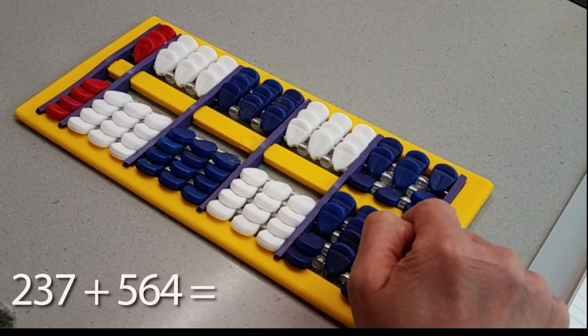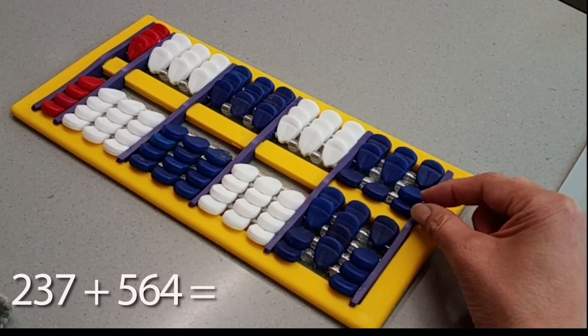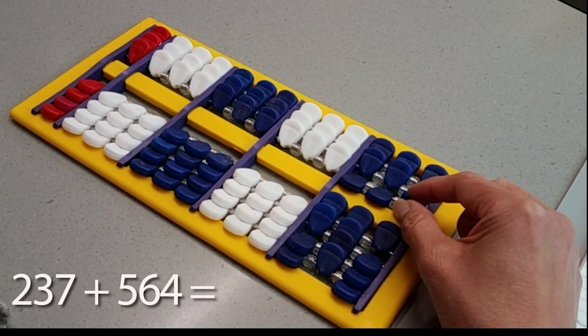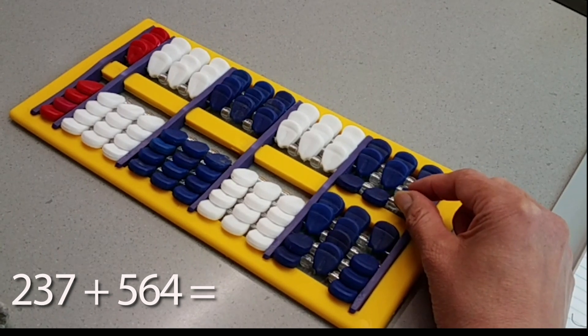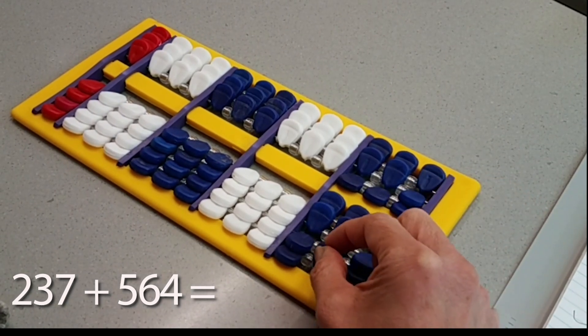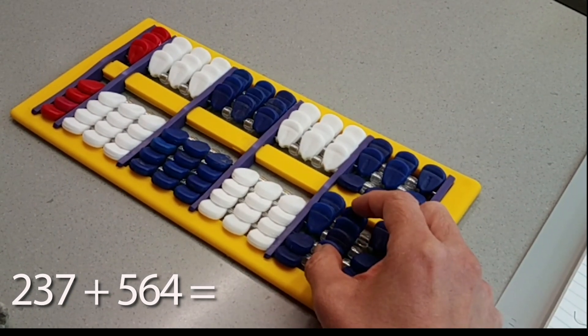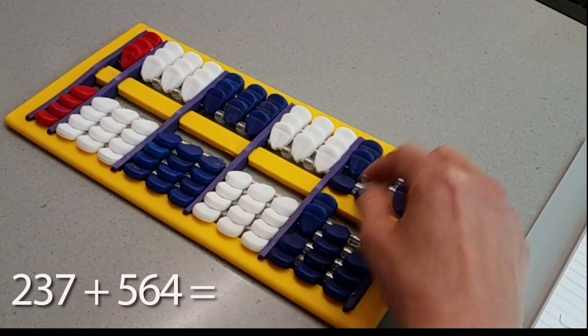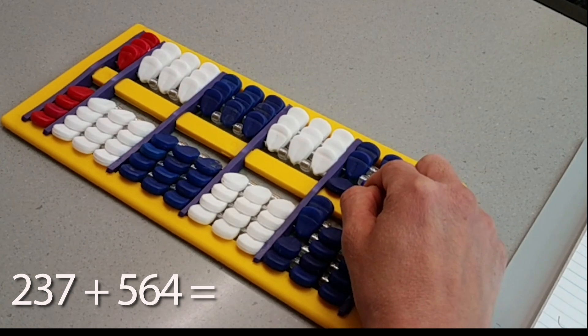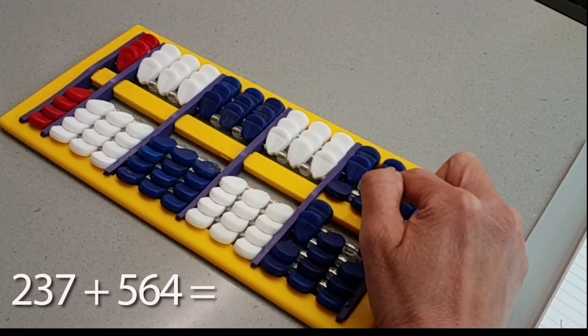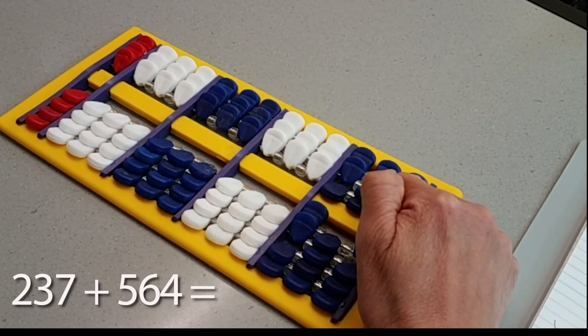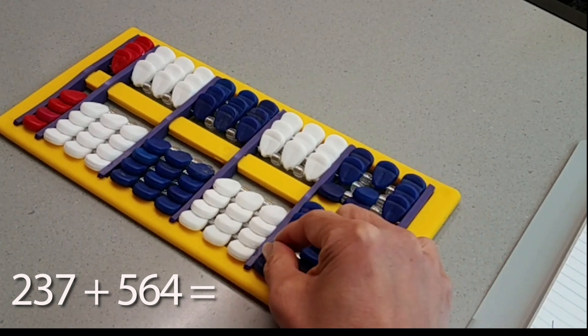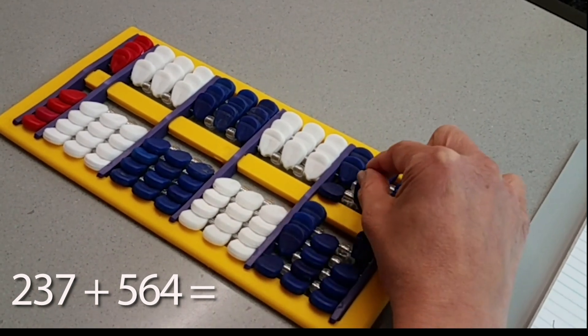So now we need to do this idea of regrouping. So in the ones place, I have a five plus a five, which is a 10, 20, 30, 40, 50. So these get replaced with a 50. And I have a 50 plus a 50, which is a 100. So I replace that 50 with this 100.